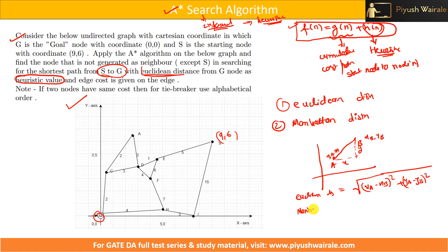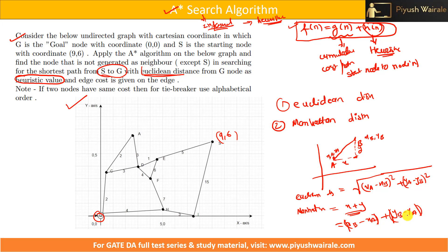Manhattan distance is calculated as x plus y, where x is the distance between the x-coordinates and y is the distance between the y-coordinates. So Manhattan distance = |xB − xA| + |yB − yA|. We take the absolute value, so it's always positive regardless of subtraction order. You should know how to compute both Euclidean and Manhattan distance.